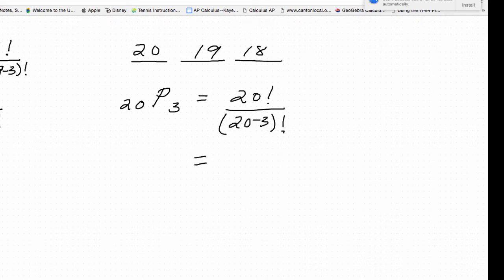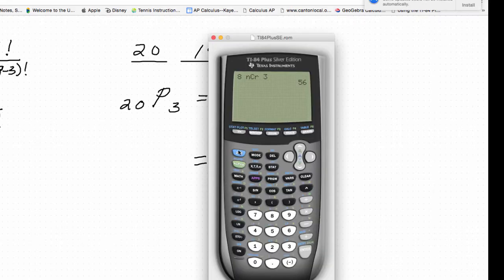Now, on the 84, all you do is have to go in, or in the 83, you just hit 20, and you're going to go math, and you're going to cursor over to probability, PRB, and hit two in this case, and you're going to hit three, and there you go.